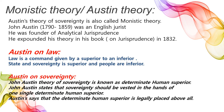Austin's theory ko monastic theory bhi kaha jata hai. John Austin (1790-1859) ek English jurist the aur wo founder the analytical jurisprudence ke. Unhone yeh theory apni book 'The Province of Jurisprudence' mein di thi, jo unhone 1832 mein likhi thi.